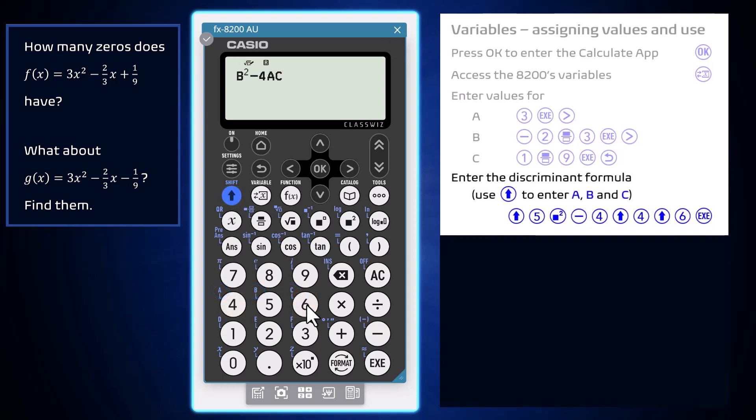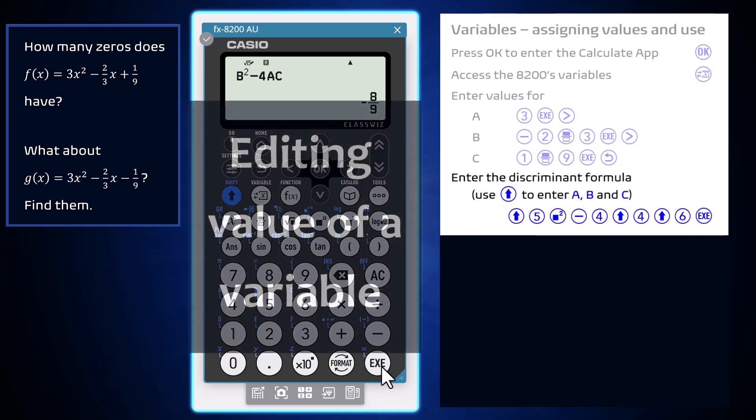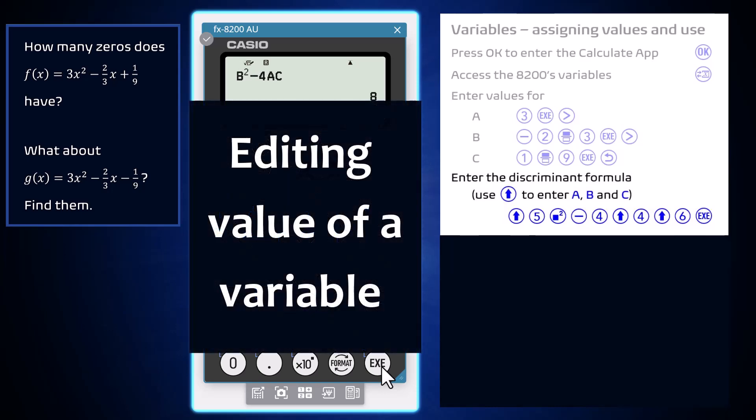Once B² take 4AC has been entered, press Execute or OK to see its value in this case, negative 8 over 9. So the discriminant of f is negative, meaning that it has no real zeros.